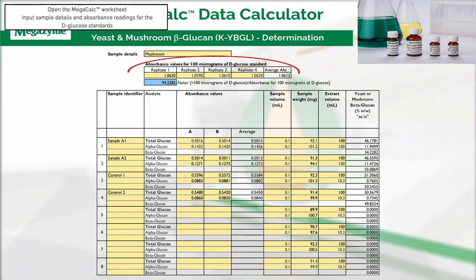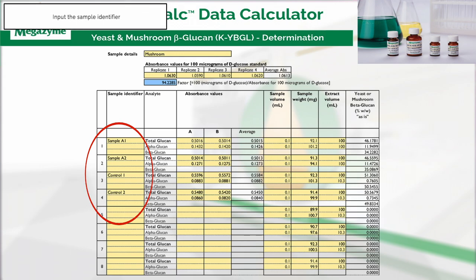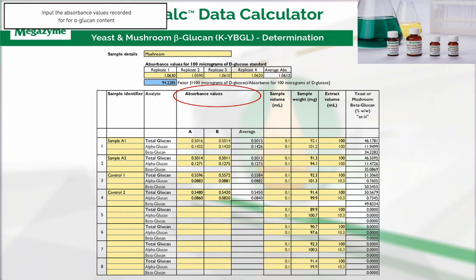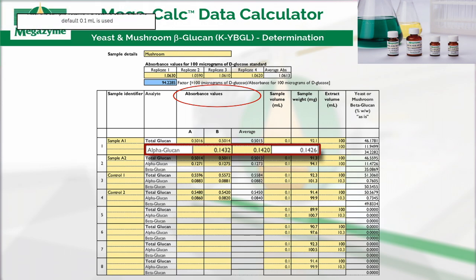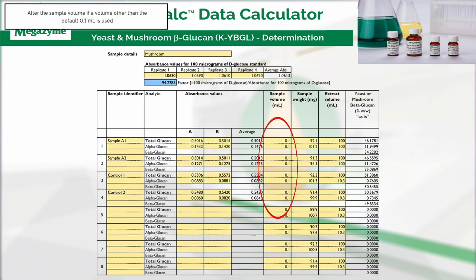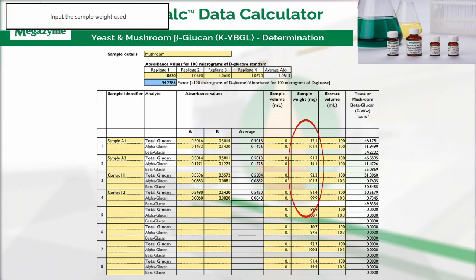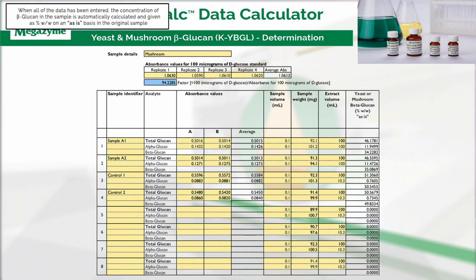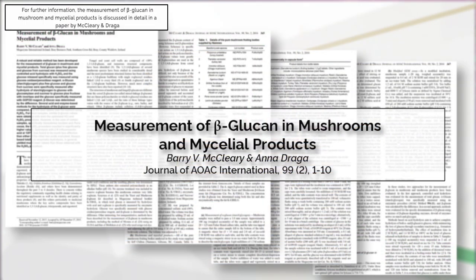The MegaCalc spreadsheet for this beta-glucan kit is available to download free of charge from the Megazyme website and provides full instructions for use. Open the MegaCalc worksheet and input the following: sample details, absorbance readings for the D-glucose standards, sample identifier, absorbance values for total glucan content, and absorbance values for alpha-glucan content. Alter the sample volume if a volume other than the default 0.1 milliliters is used, and input the sample weight. Alter the extract volume if a volume other than the default 100 milliliters for total glucan or 10.3 milliliters for alpha-glucan has been used. When all data has been entered, the concentration of beta-glucan is automatically calculated and given as percent weight per weight on an as-is basis. Further information on the measurement of beta-glucan in mushroom and mycelial products is discussed in detail in a paper by McCleary and Draga.